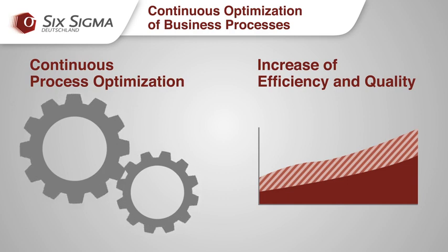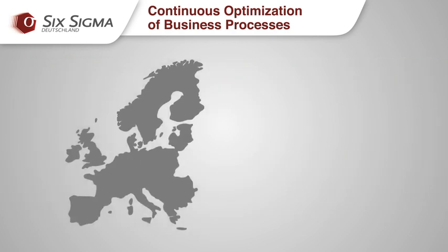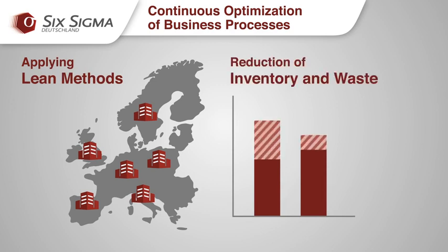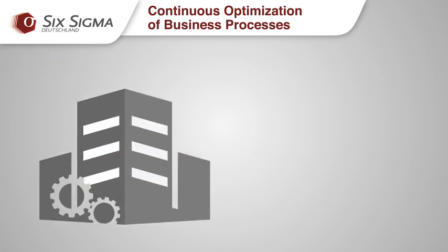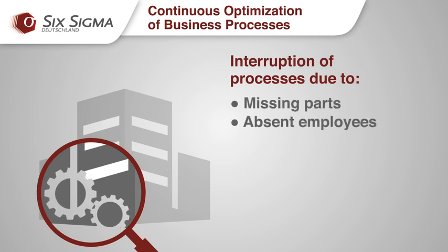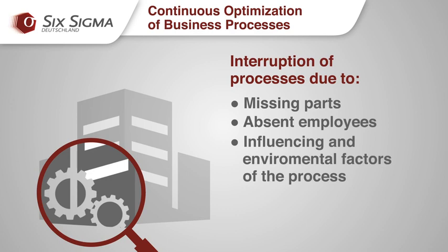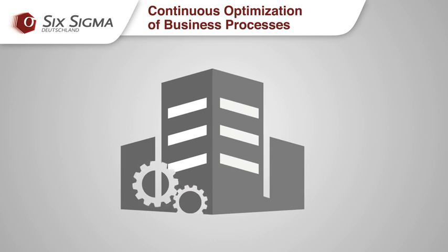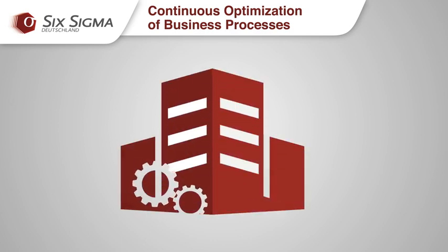The quality and costs of a product are the direct result of an efficient and robust process. By employing lean methods, many organizations in Europe have been successful in reducing built-up inventory buffers and other forms of waste. This has led in turn to the exposure of the inherent weakness of important organizational processes. Work was being interrupted by missing parts, absenteeism and other critical influencing factors in and around the processes. In order to make their processes robust and stable, many companies have introduced Six Sigma.